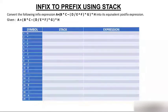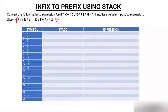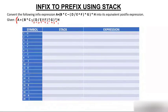In postfix we put a right parenthesis to the right of the expression; now we do the opposite. In prefix, we put a left parenthesis to the left of the expression. Then scan the expression from right to left instead of left to right. Number every symbol from right to left: 1, 2, 3, 4... all the way to 20.